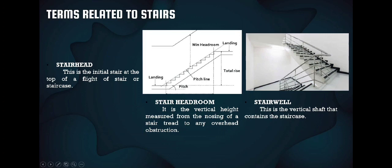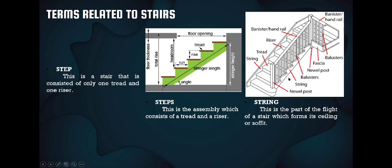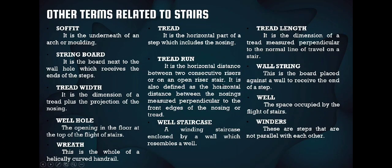The stairwell is the vertical shaft that contains the staircase — the whole rectangular portion that the stairs are attached to. A step consists of only one tread and one riser. Steps are the assembly consisting of a tread and a riser. A string is the part of the flight of a stair which forms its soffit — the structure that the steps are attached into.